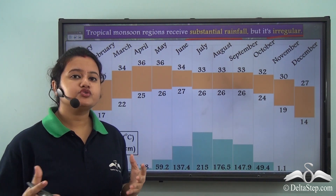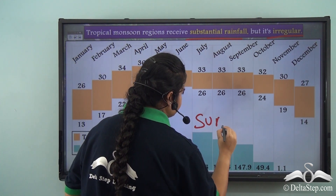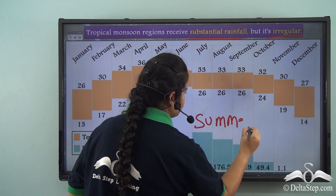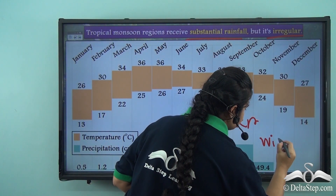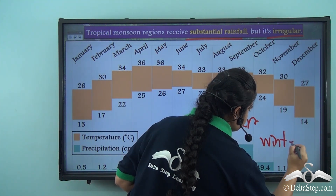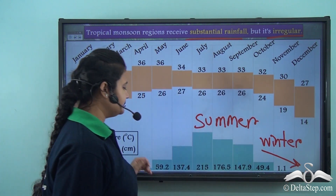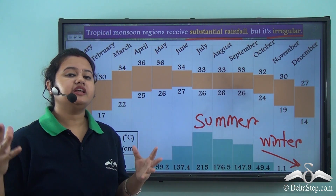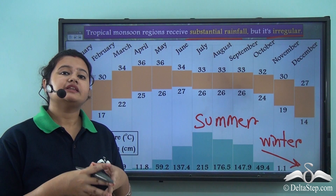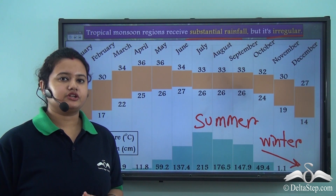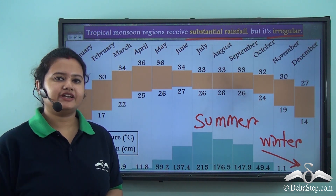Most of the rainfall occurs during the summer months, whereas during winter the rate of precipitation drops significantly and the region receives very little rainfall. This is the pattern of precipitation in tropical monsoon regions. Now let us look at the temperature conditions of this region.